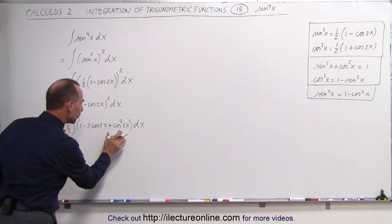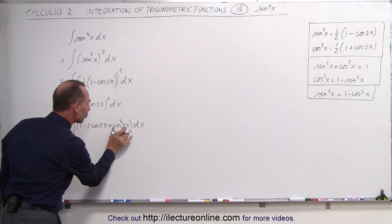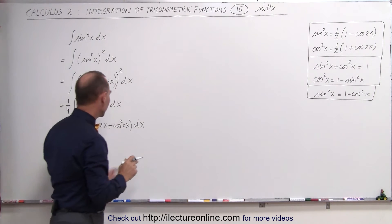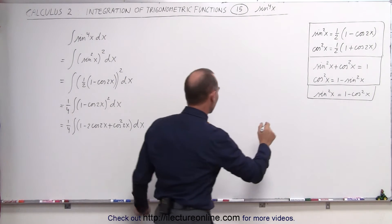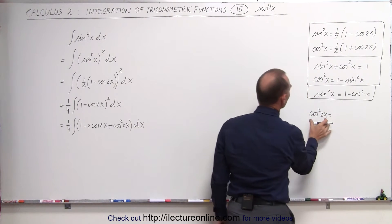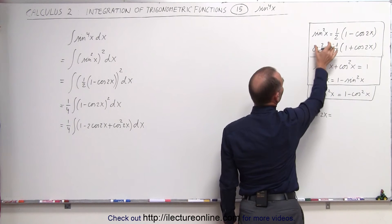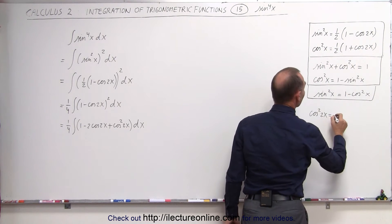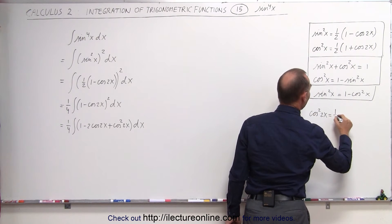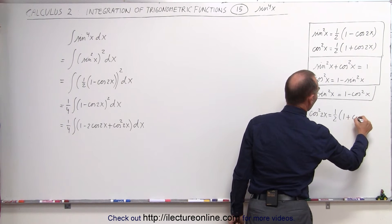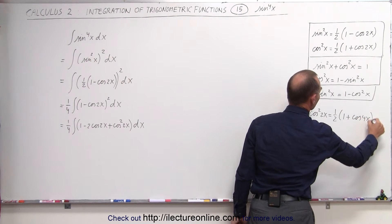The only thing we have left is the cosine squared of 2x. We can again simplify that. If we have the cosine squared of 2x, that is equal to one half times 1 plus the cosine of 4x — notice that we double the angle and everything else looks exactly the same.